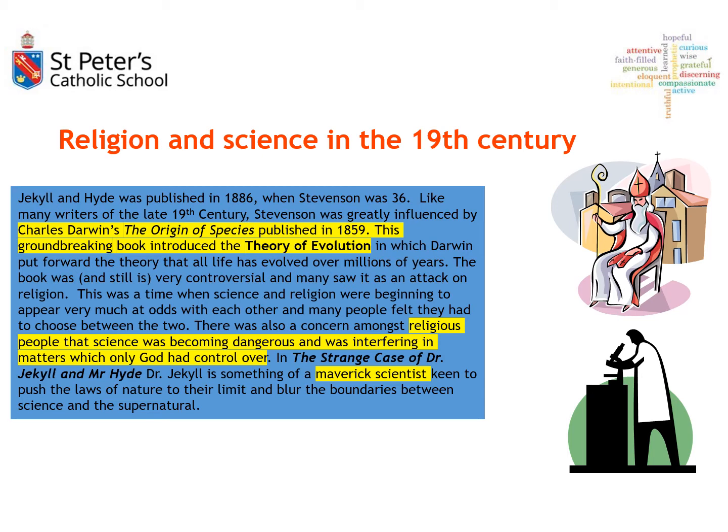Religion and science was a really important aspect of Victorian society. One of the most significant events of the 19th century was Charles Darwin's The Origin of Species, which introduced the theory of evolution. When it was first published in 1859, it was a revolutionary and controversial piece of work — people genuinely thought it was designed to be against the word of God. Stevenson would have been aware of this, and throughout the novel there are references to God and how characters interact with faith.